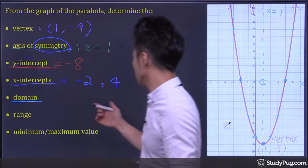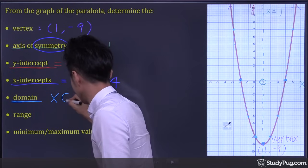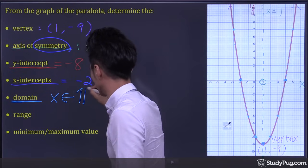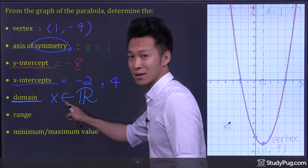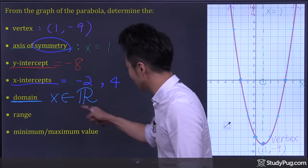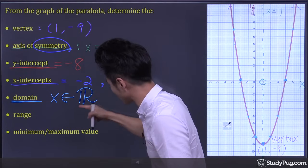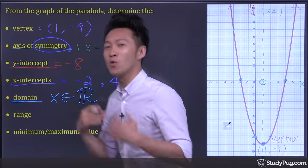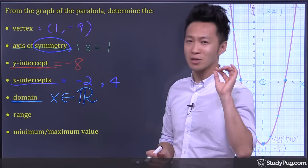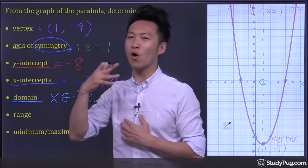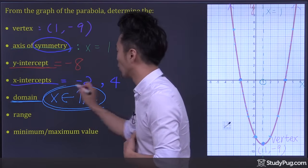And we write the mathematical notation like this: x is all real numbers. This symbol here — an R with an extra bar — represents all real numbers. In fact, the domain for any quadratic function is always x is all real numbers.